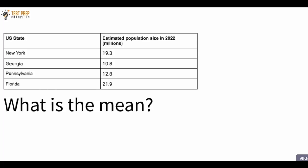The mode is just the number that occurs most frequently. For example, if there were another state with a population of 10.8 — just like Georgia — then 10.8 would appear twice in the data set, making it the mode. All you have to do for mode is figure out which number occurs the most.